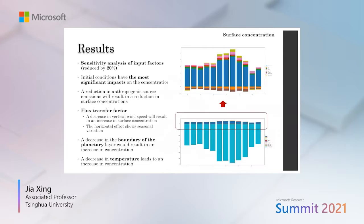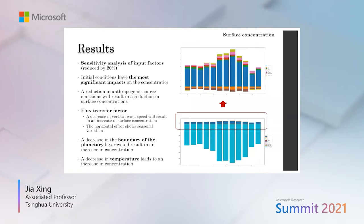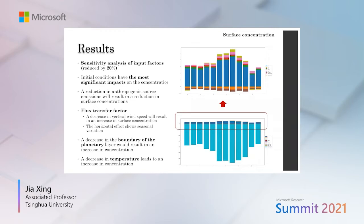Another advantage of the NN model over traditional numerical models is its very efficient computation — we can easily predict results. We can modulate and change inputs to see how concentration responds to those changes. This is called sensitivity analysis, since the NN model is a kind of black box. This result shows how changing input factors — emissions and meteorology — by reducing their values affects the resulting concentration.